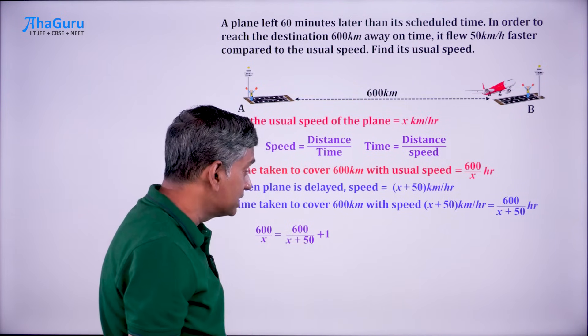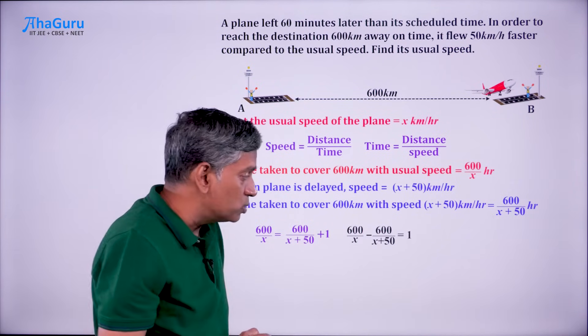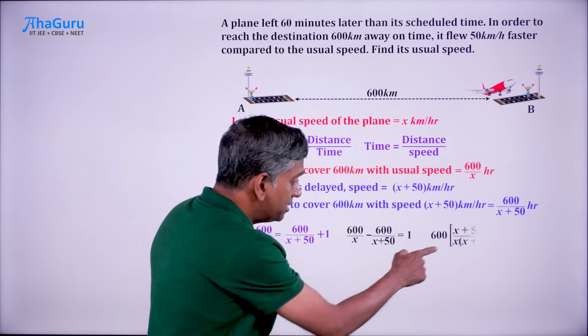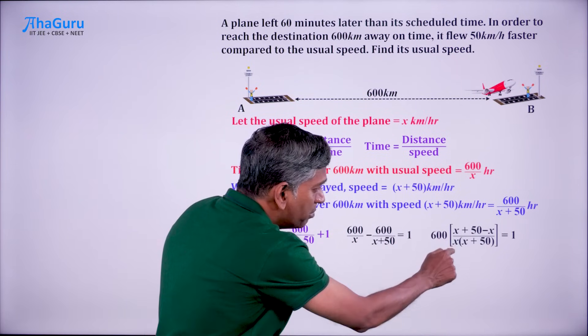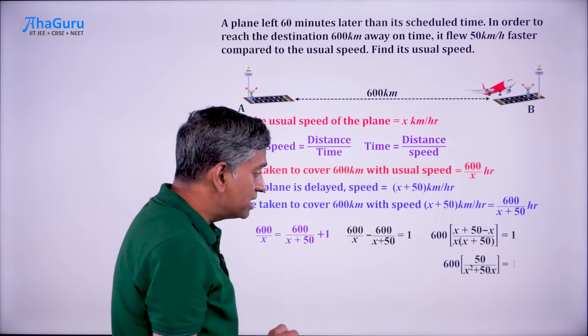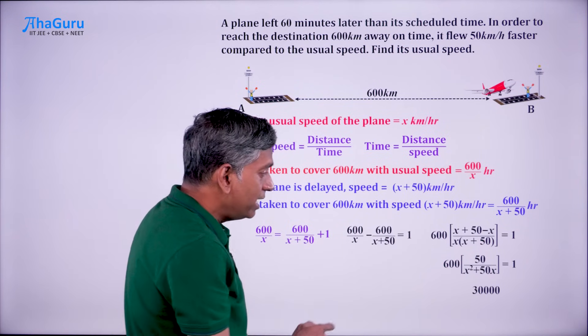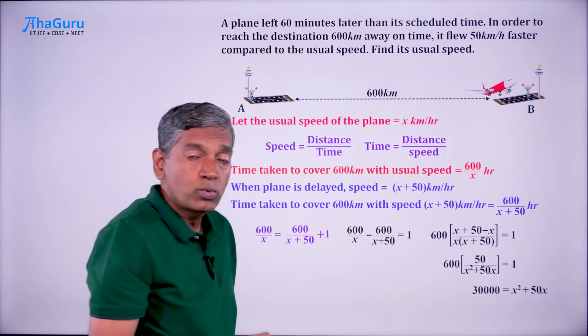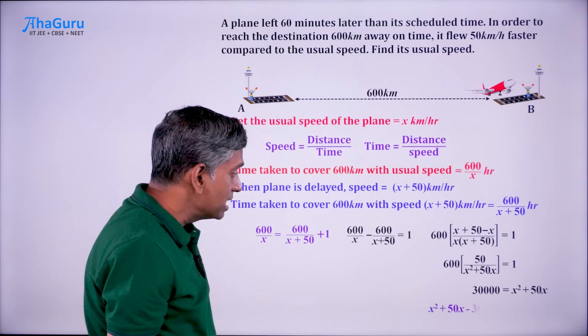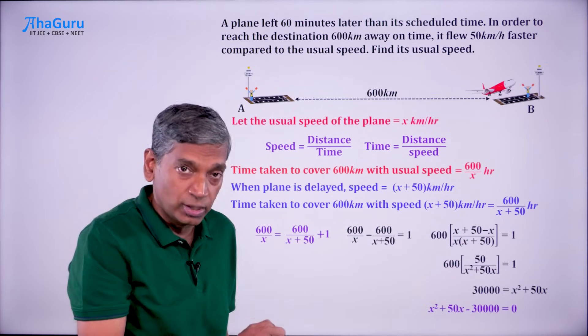After this, we have to simplify this and we get 600 by x minus 600 by x plus 50 equals 1, which means 600 into x plus 50 minus x by this equals 1. This is taking LCM. If you cross multiply, you are going to get 30,000 equals x squared plus 50x.